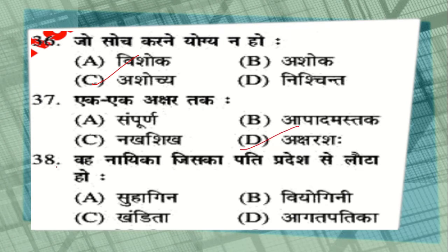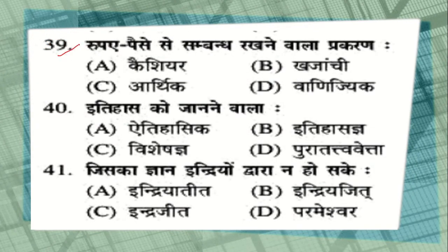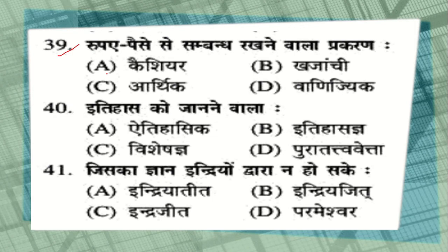Question number 38: वह नारी जिसका पति प्रदेश से लौटा हो — options: सुहागिन, वियोगिनी, खंडिता, या आगतपतिका. The correct answer is option B, वियोगिनी — जिसका पति प्रदेश से लौटा हो. Question number 39: रुपये पैसे से संबंध रखने वाला प्रकरण — options: cashier, खजांची, आर्थिक, या वारेजिक. The correct answer is आर्थिक — जो रुपये पैसे से संबंधित होता है. Question number 40: इतिहास को जानने वाला — options: ऐतिहासिक, इतिहासज्ञ, विशेषज्ञ, या पुरातत्ववेत्ता. The correct answer is इतिहासज्ञ — जो इतिहास को जानता हो.